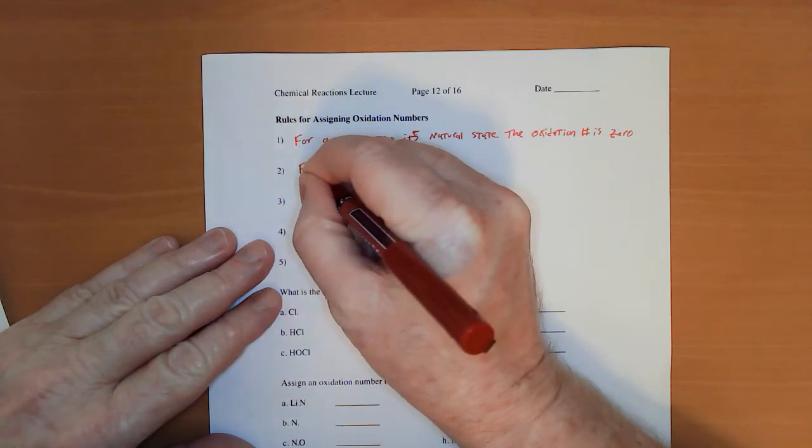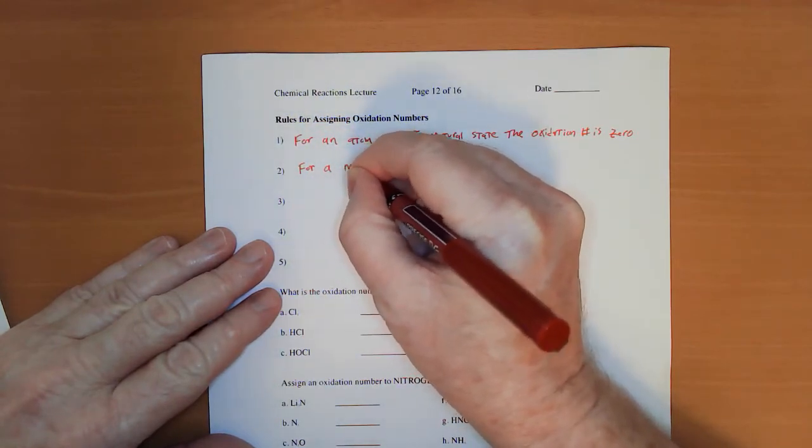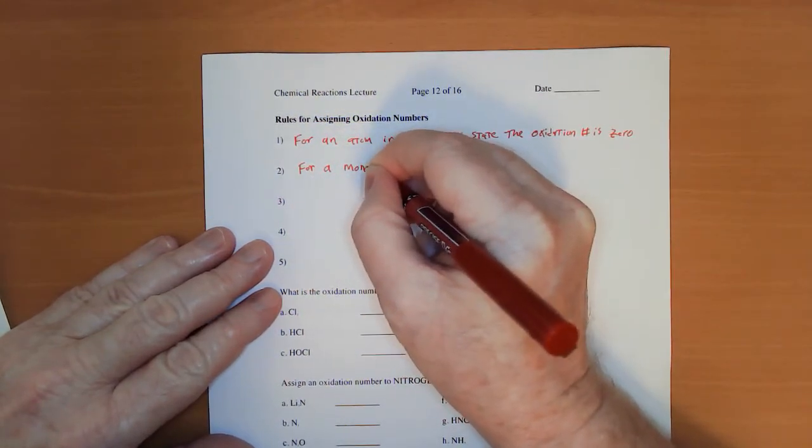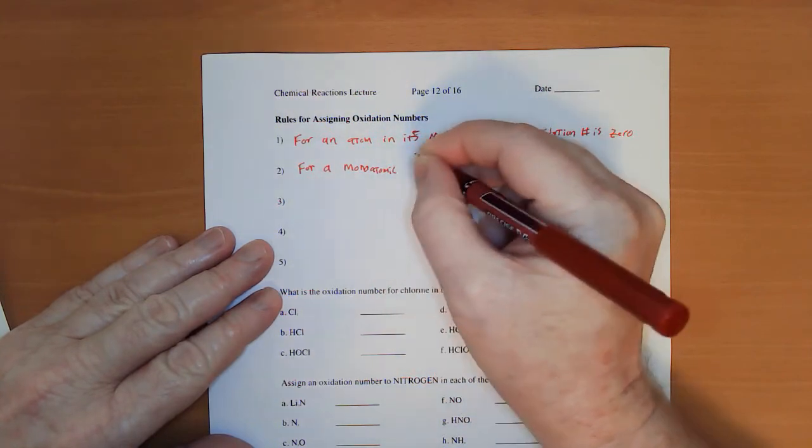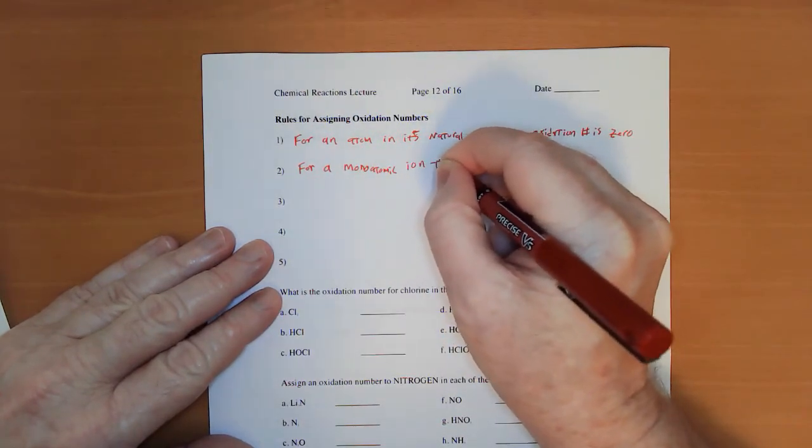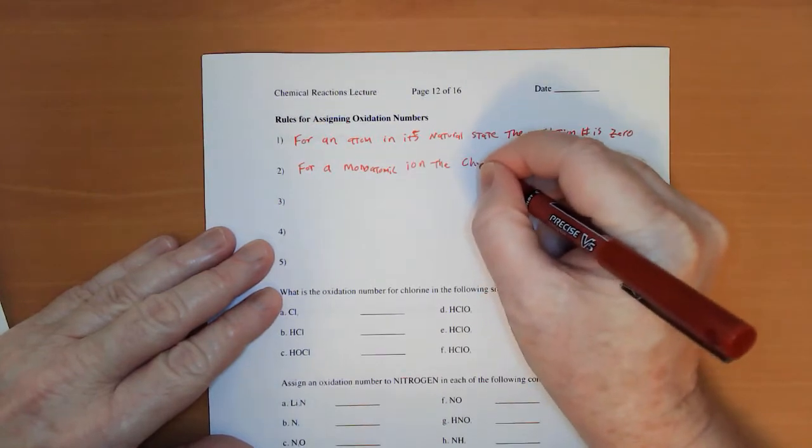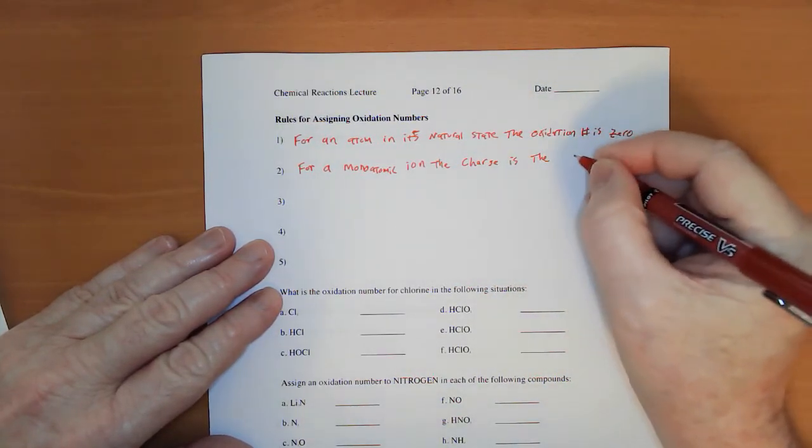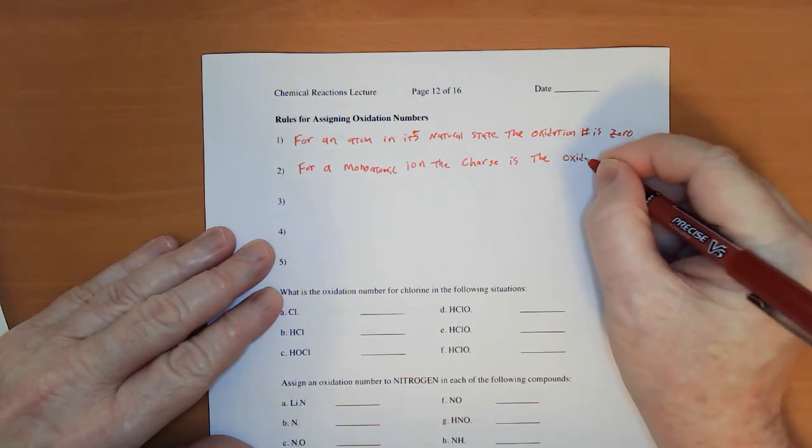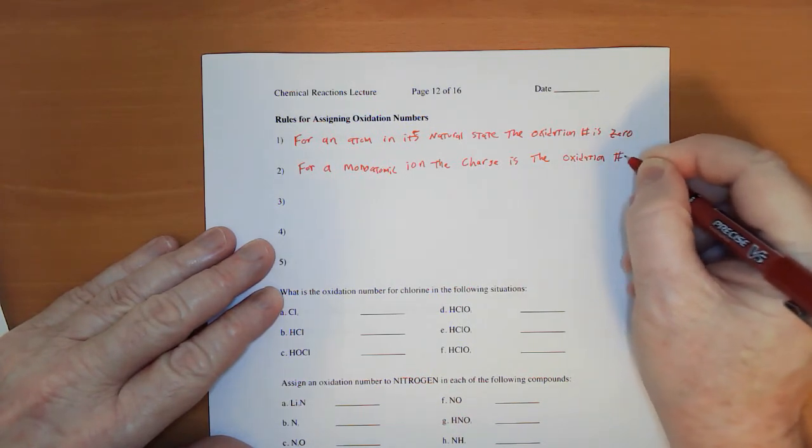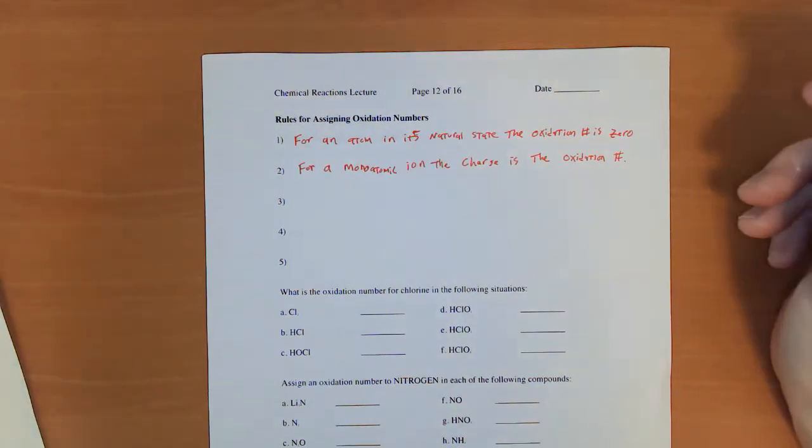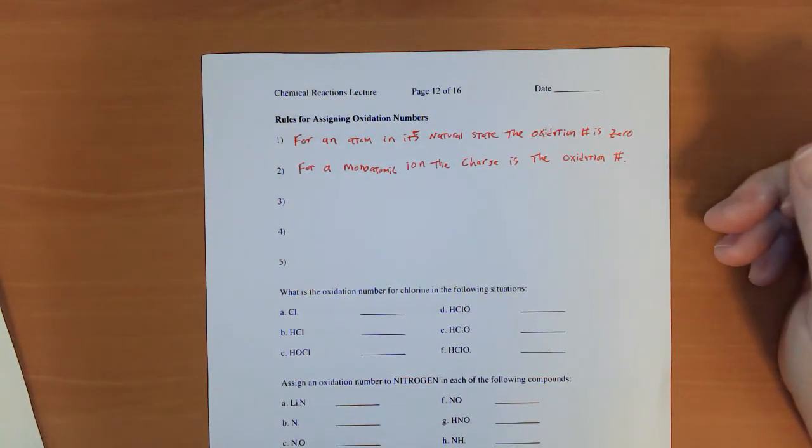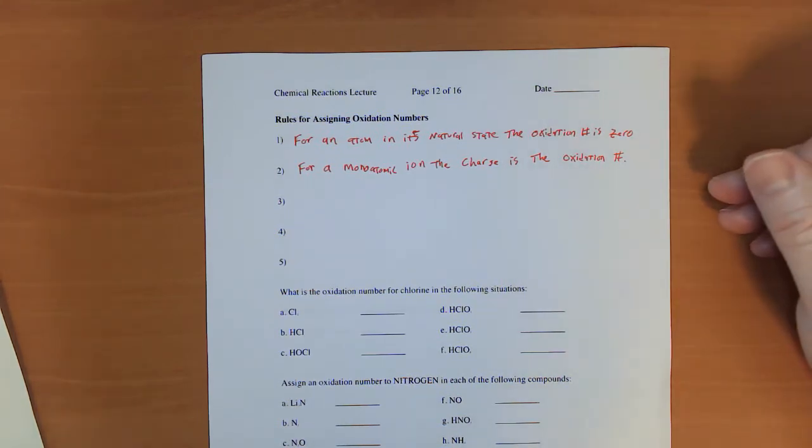Two. For a monoatomic ion, the charge is the oxidation number. So if you have something like chloride, Cl-, the oxidation number is negative one. If you have sodium ion, Na+, the oxidation number is plus one. Pretty straightforward.